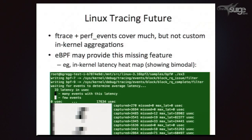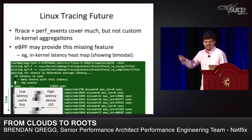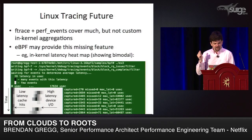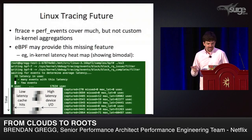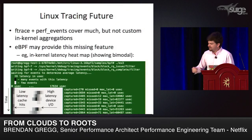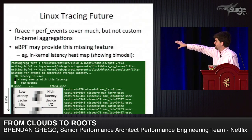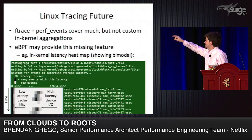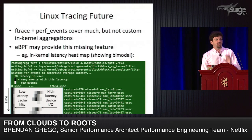For the Linux tracing future, eBPF is going to provide a badly needed feature: custom in-kernel aggregations. Here's an example — this is doing an ASCII heat map of disk I/O latency. Latency is on the x-axis, time is on the y-axis, printing every second. I've got low-latency cache hits, high-latency device I/O — bimodal — doing in-kernel aggregations. It's really efficient and fast.